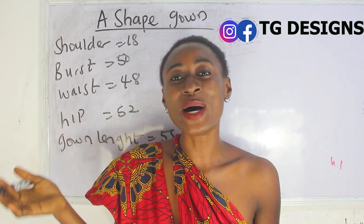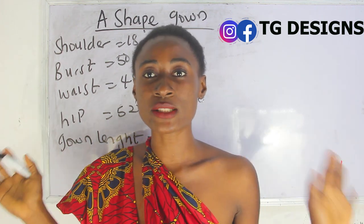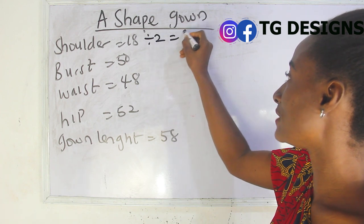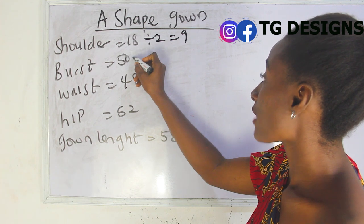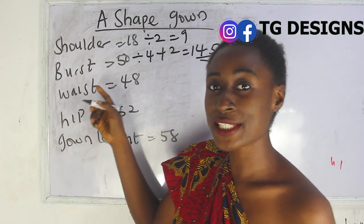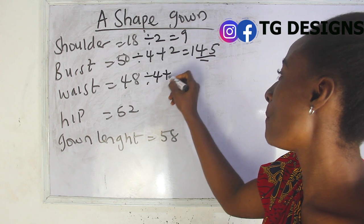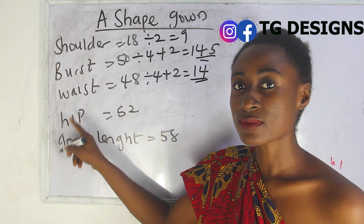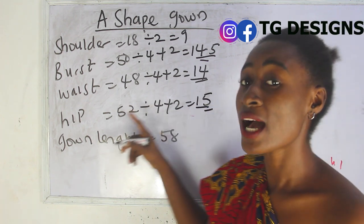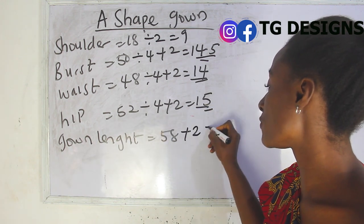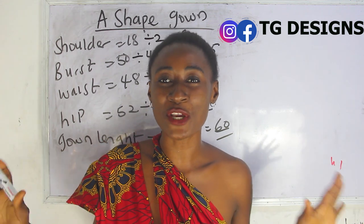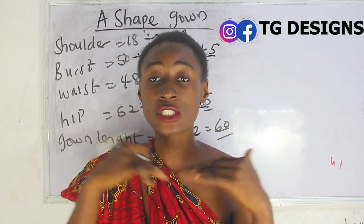The basic measurements required are: shoulder, bust, waist, hip, and gown length. Our shoulder measurement is 18, divided by 2 we have 9. Our bust is 40 — 40 divided by 4 plus 2 we have 14.5 inches. Our waist is 48 — 48 divided by 4 plus 2 we have 14 inches. Our hip is 52 — 52 divided by 4 plus 2 we have 15 inches. Our gown length is 58 plus 2 inches sewing allowance, giving us 60 inches.